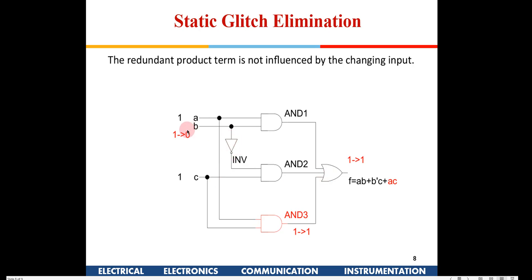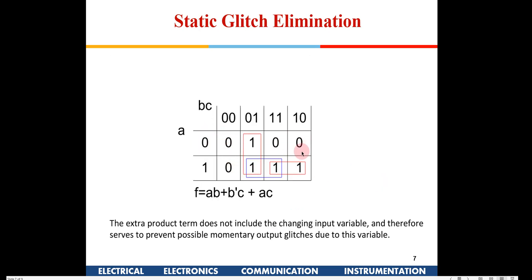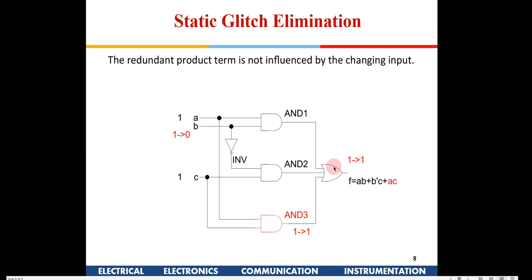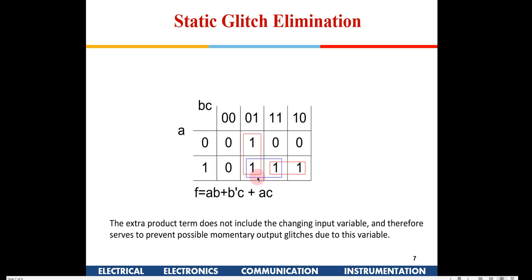Now when B is changing from one to zero, the top AND gate goes off first. But the extra AND gate computing A AND C gives a one here, providing an alternate path that maintains the output. So there is no glitch. The total output for all static conditions remains unchanged — this incorporation of the additional gate eliminates the static one hazard.